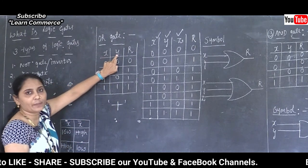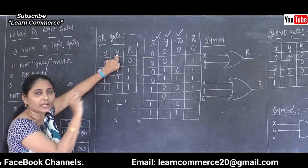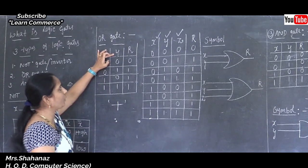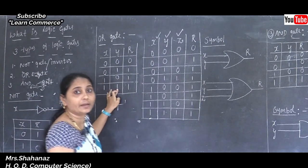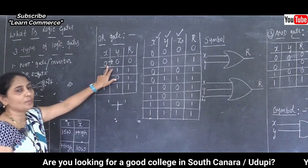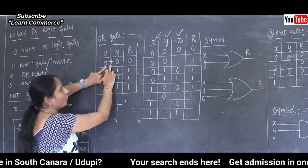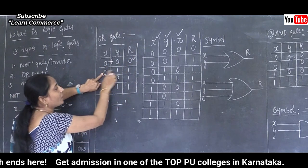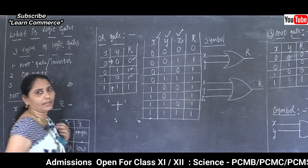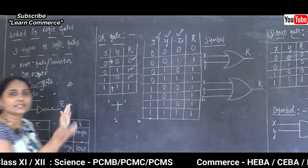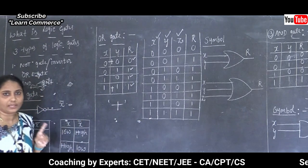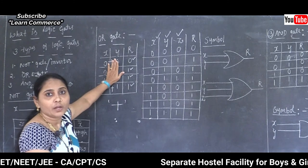For two variables, two to the power of two equals four combinations. Column values: X is 2-0-2-1 and Y is 0-1-0-1. To get the OR gate result: 0+0=0, 0+1=1, 1+0=1, and 1+1=1 (in Boolean algebra, 1+1 is always 1, not 2).